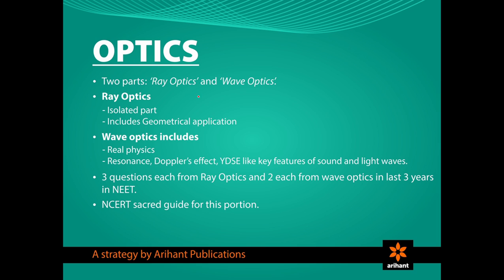The next portion is Optics, which consists of two parts: Ray Optics and Wave Optics. Ray Optics is an individual and isolated path; its problems involve the application of geometry, and if your visualization is perfect, it is captured very easily. Wave Optics on the other hand includes real physics, with interesting phenomena like Resonance, Doppler's Effect, and Young's Double Slit Experiment (YDSE). The frequency of questions asked in NEET in the past 3 years based on Ray Optics is 3 and on Wave Optics is 2. For Wave Optics, NCERT is considered the ultimate guide.